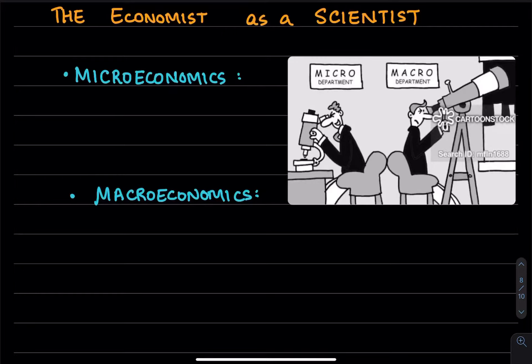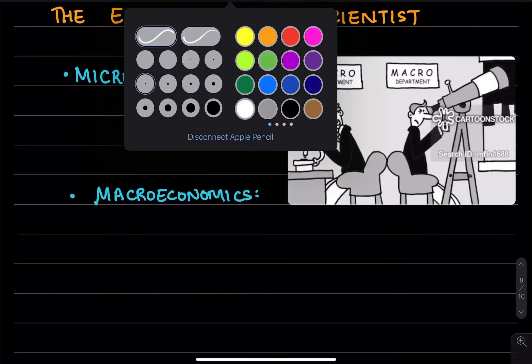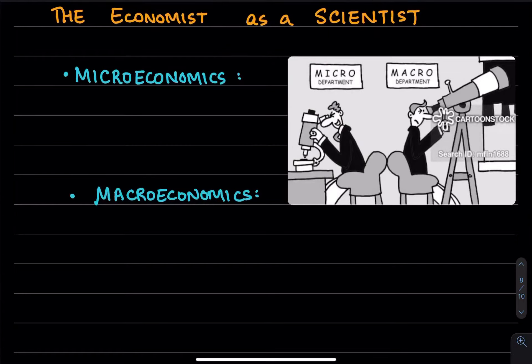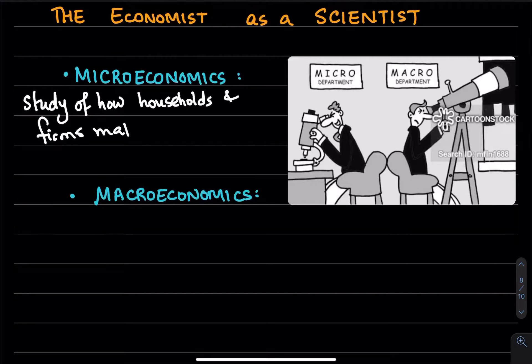But just broadly speaking, microeconomics is the study of how smaller units like households and firms make decisions and interact in markets.